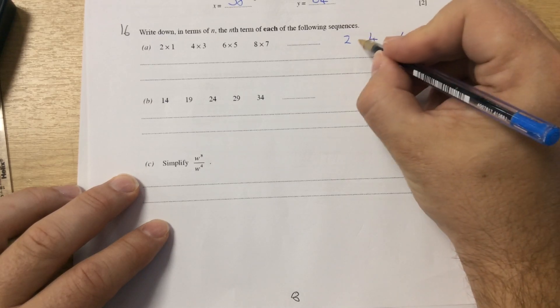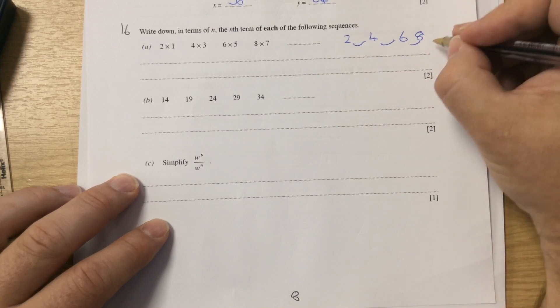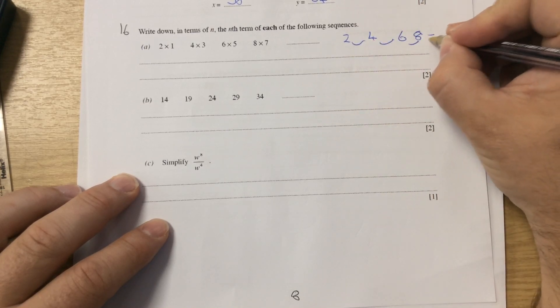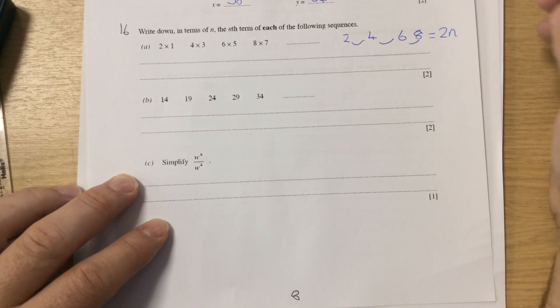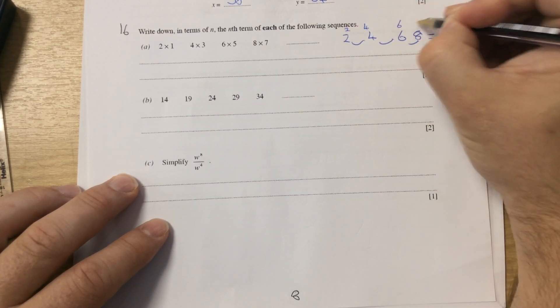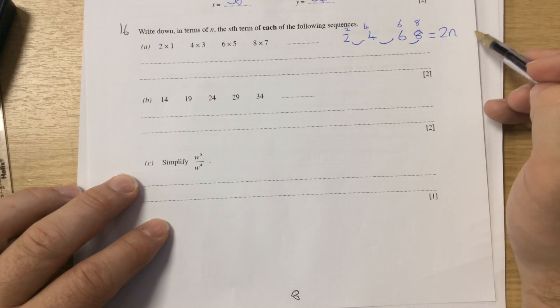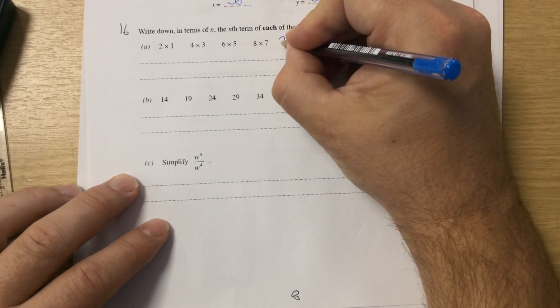So when you find the nth term, you work out what is going up in each time. It's going up in twos. So because it's going up in twos, you write 2n. And then you write the two times table above it. So it's 2, 4, 6, 8. So because it's exactly the same, you don't need to add or take away anything. So the first term would be 2n.